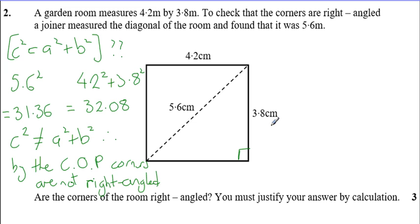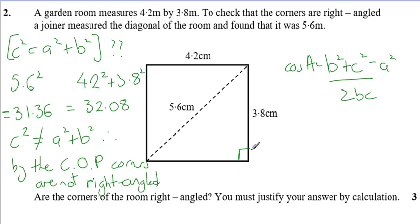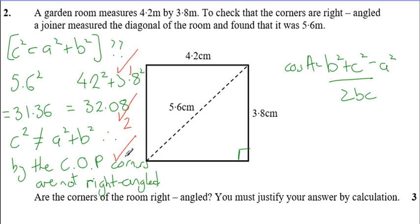Your other option is to use the cosine rule to find the angle: cos A = (b² + c² − a²) / 2bc. Substituting in with 5.6 as the side opposite the angle, running it through and finding the answer — if it's 90 degrees the corners are right-angled, though the converse of Pythagoras tells us they're not. Marks: first for setting up converse of Pythagoras, second for calculating it, third for your statement. With the cosine rule: one mark for substituting in, one for finding the answer, one for your statement.